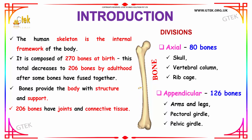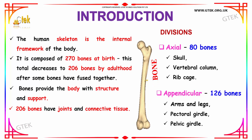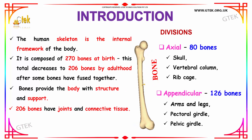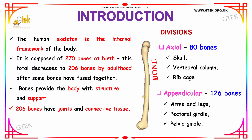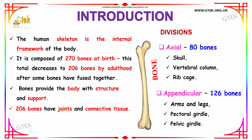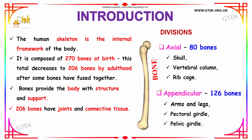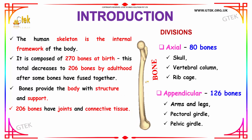The bones fuse together to form larger bones as the child grows, so in adulthood a person will have a total of 206 bones. The bones have their main purpose to provide the structure and support required for a human body, and the 206 bones are joined using connective tissues and joints.